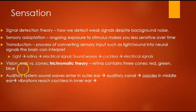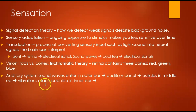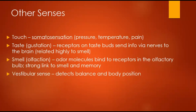In terms of vision, rods versus cones: rods are more responsible for night vision and work well in low light, whereas cones are concentrated in the center of the retina and deal with color vision. For the auditory system, sound waves enter the outer ear, travel through the auditory canal and ossicles in the middle ear, and then vibrations reach the cochlea in the inner ear. Other senses include touch — somatosensation — dealing with pressure, temperature, and pain.